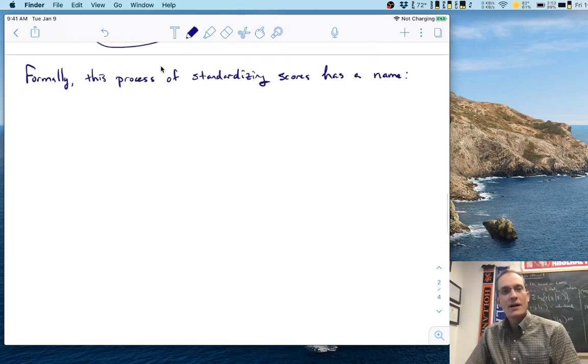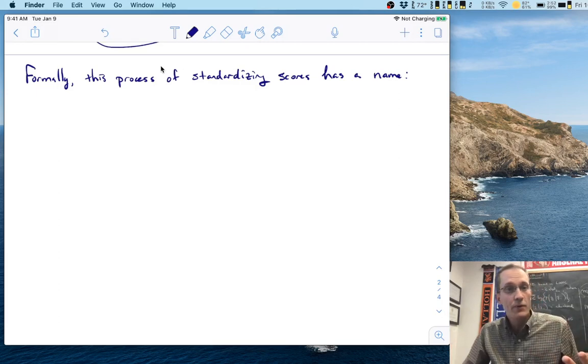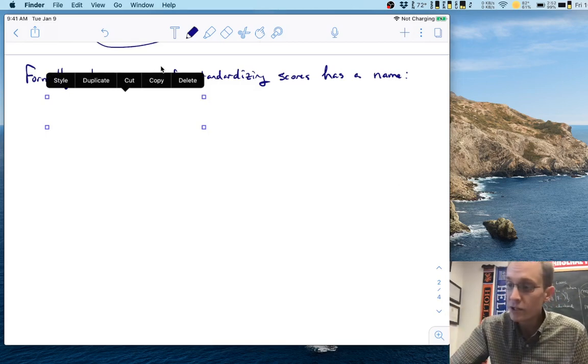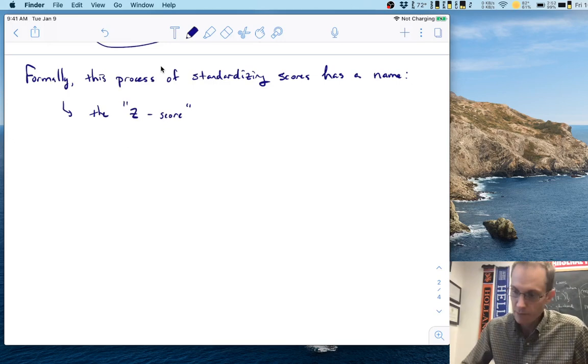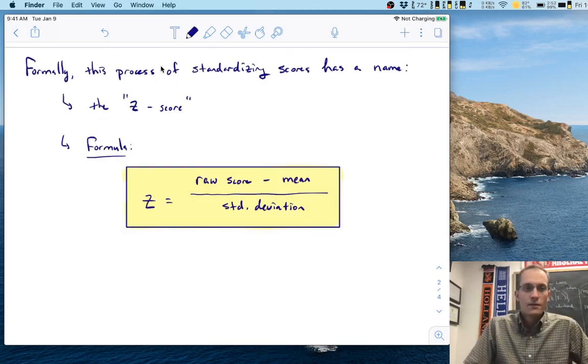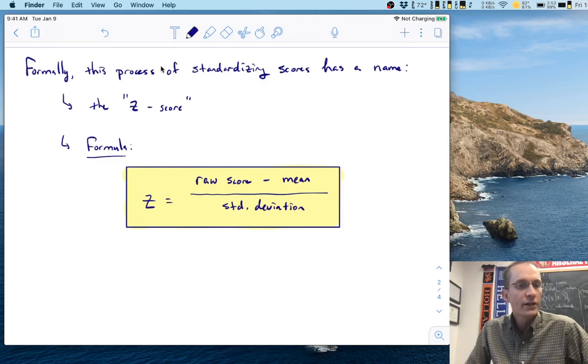So formally, this process of standardizing that we just walked through, any example that we would do would be similar. This process actually has a name and this is actually the name we're going to use repeatedly this semester and it's called the Z score. This Z score has a formula. So first I'll give you, I'll do this often this semester. First, I'll give you the formula in words. How would one go and compute a Z score? Well, the way it's done is as follows.